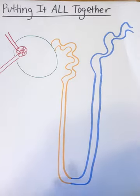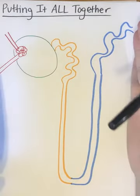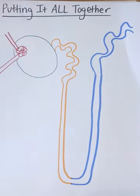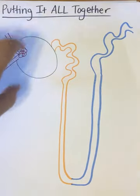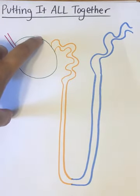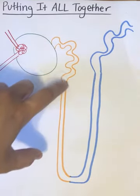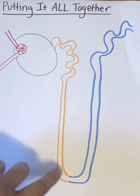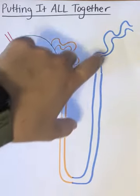I'm going to talk about putting it all together. The very first thing we talked about was the nephron, the functional unit. You have your renal corpuscle, which includes the glomerulus and the glomerular capsule, the renal tubules, your proximal convoluted tubule, descending loop of Henle, and ascending limb.